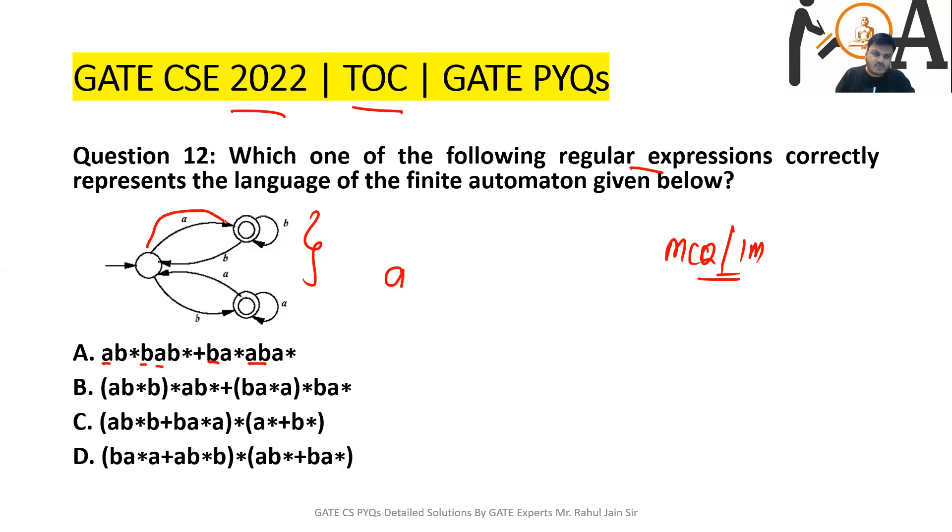But you can simply see that single A can also be accepted. Single A from this state to this state can be accepted. But option A is not accepting any single A, right? As well as not accepting any single B. Thus option A is false.